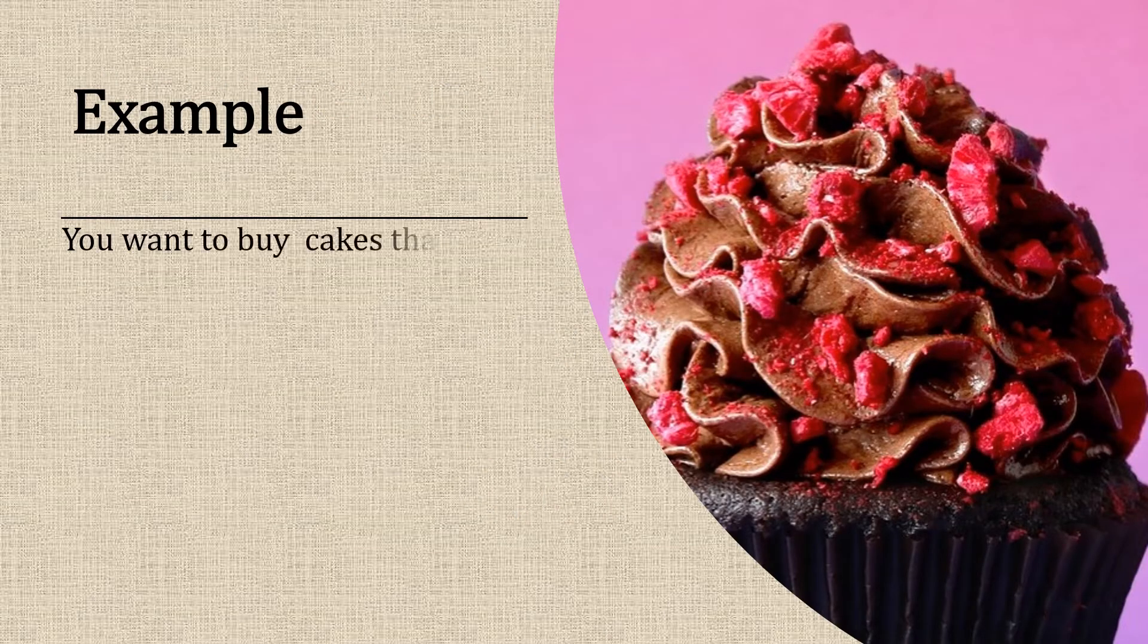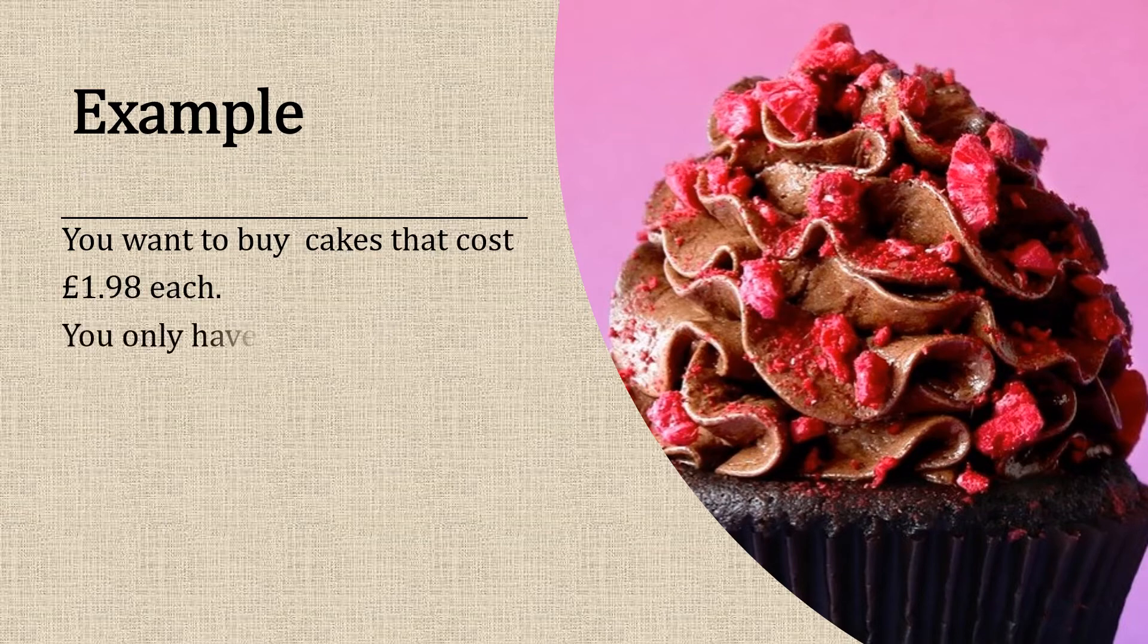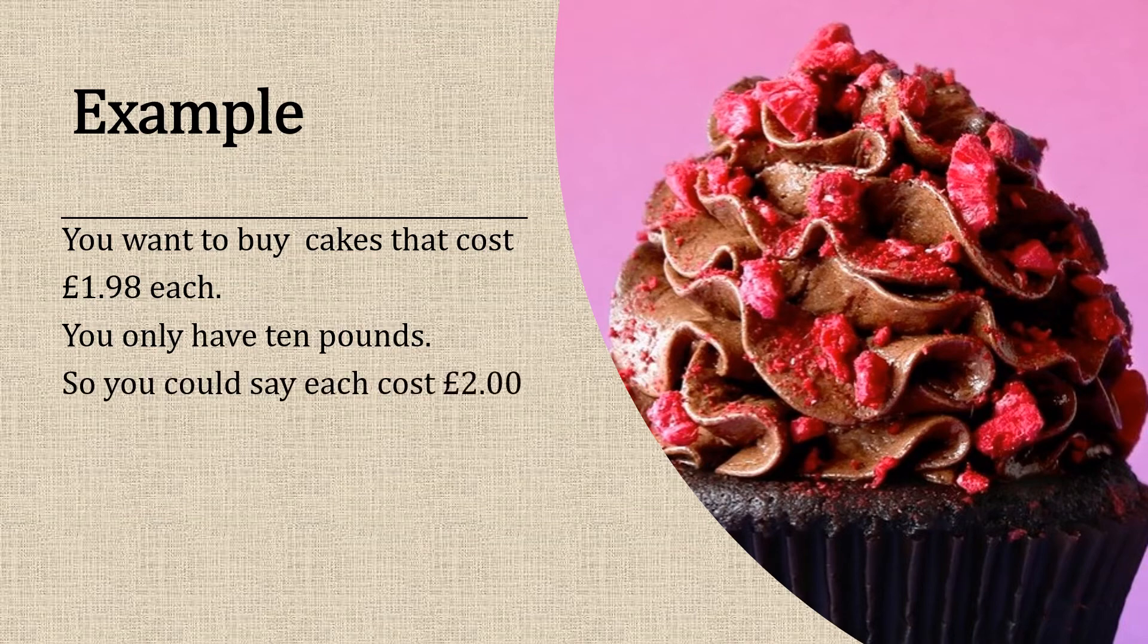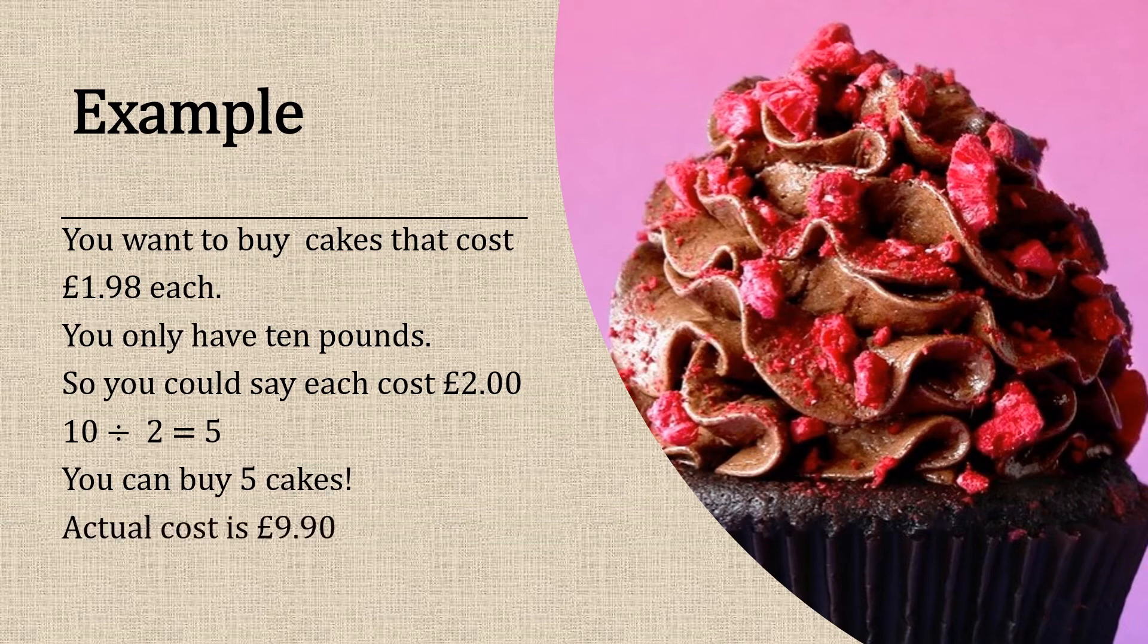Example: you want to buy some cakes that cost £1.98 each but you only have £10. You could round up to say each cake costs £2 and 10 divided by 2 is 5. So we know that you can buy five cakes and the actual cost is £9.90.